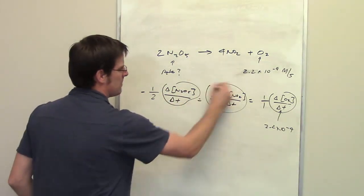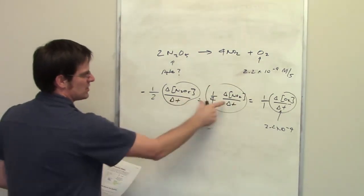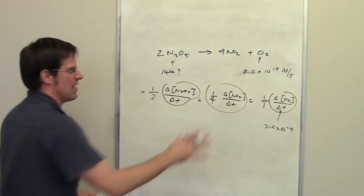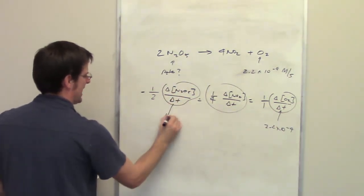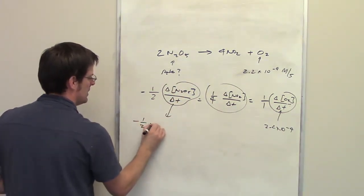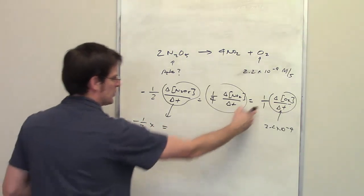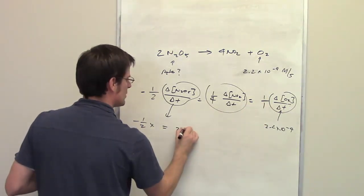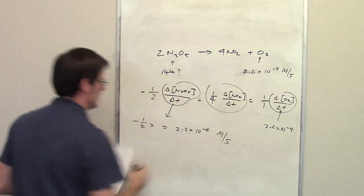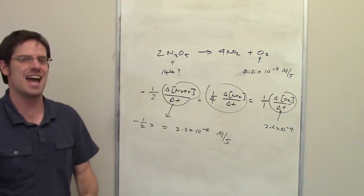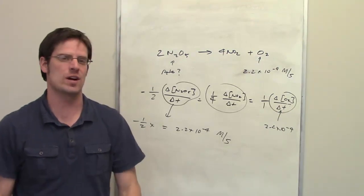This component I can ignore because I don't really have to have it since each of these components are individually equal. If I have any one of them, I can determine the other. So I'm going to replace this with x, and I'm going to say negative one-half times x is going to be equal to 2.2 times 10 to the negative 4 molars per second. All I have to do is solve for x, and that will give me the answer to this question.